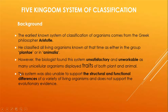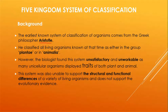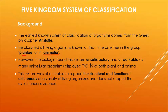Let's study a bit of background on why the five kingdom system of classification was given. The earliest known system of classification comes from the Greek philosopher Aristotle. He divided all living organisms into Plantia or Animalia, meaning only two classified systems were present at that time. However, biologists found this system unsatisfactory and unworkable because some unicellular organisms were showing traits of both plant and animal.